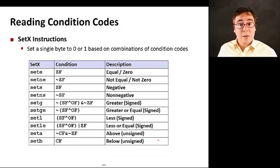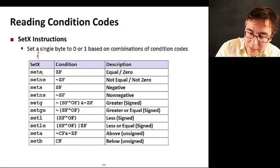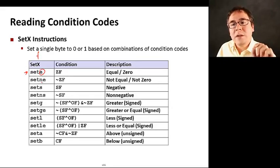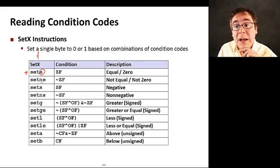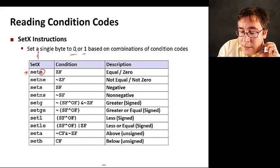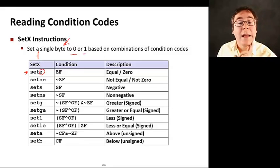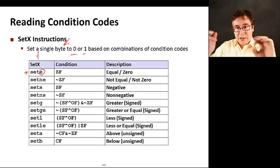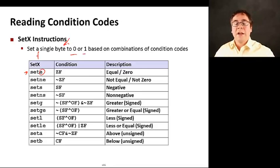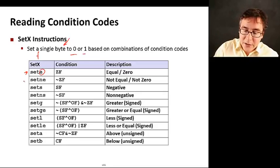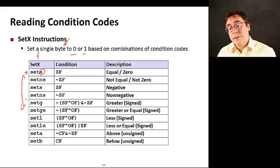We can also read condition codes. There are several instructions called set with various options. What they do is read the condition codes and put the resulting value as zero or one, the whole byte as zero or one, in a general-purpose register. So you can actually read and do computation with the contents of the condition code register. I encourage you to look at the book for examples.